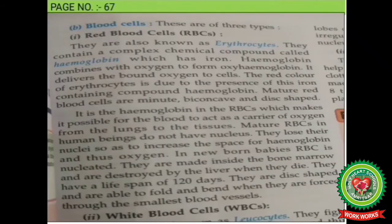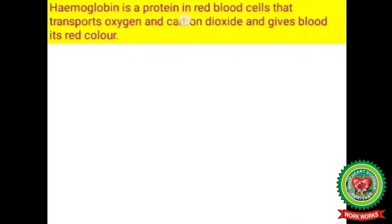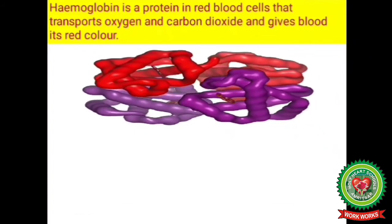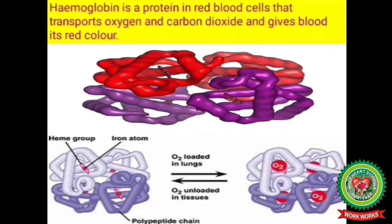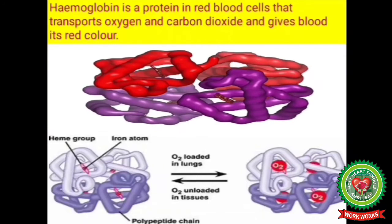Now open page number 67. Red blood cells, also known as erythrocytes, contain a complex chemical compound called hemoglobin. Hemoglobin is a red-colored protein pigment in red blood cells that transports oxygen and carbon dioxide and gives blood its red color. It carries oxygen from the lungs to all cells of the body and also carries carbon dioxide produced by the cells during respiration back to the lungs.